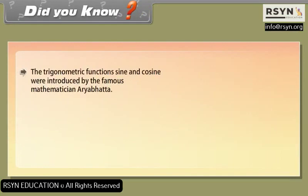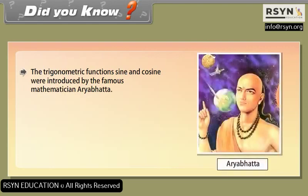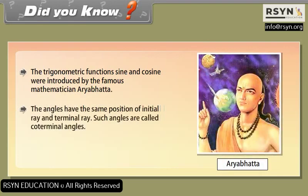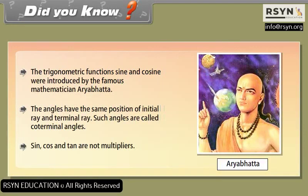Did you know? The trigonometric functions sine and cosine were introduced by the famous mathematician Aryabhata. Angles that have the same initial ray and terminal ray are called coterminal angles. Note: sine, cos, and tan are not multipliers.